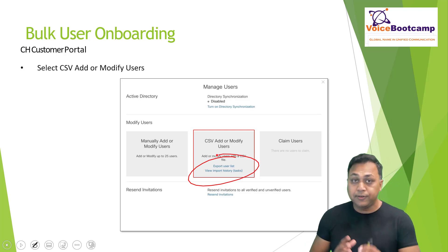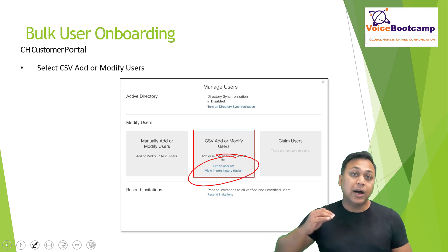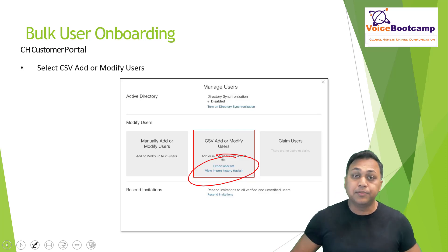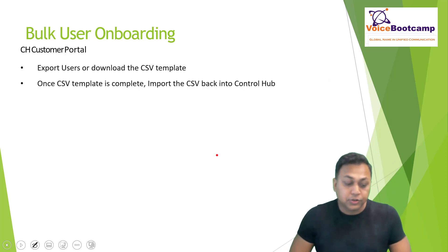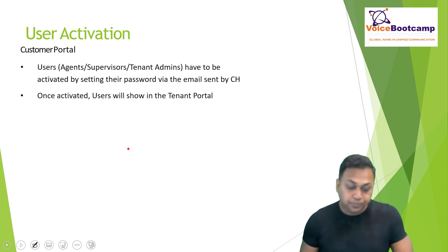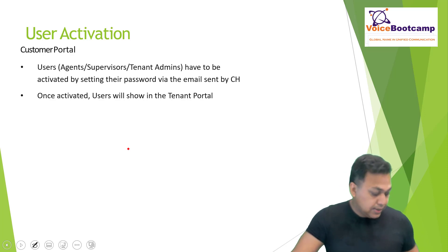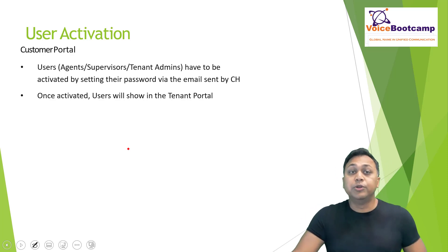You can upload a CSV file — download the template, modify it as Webex expects, then upload it. Make sure the user ID is the user's email address, otherwise the upload will fail. Once the CSV is completed, import it into Control Hub and follow the procedures. You can import or export. For user activation, users must activate their account by setting a password via the email sent by Control Hub. Once activated, the user will appear in the tenant portal.